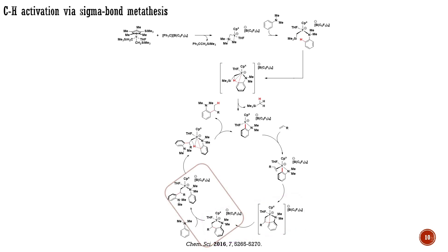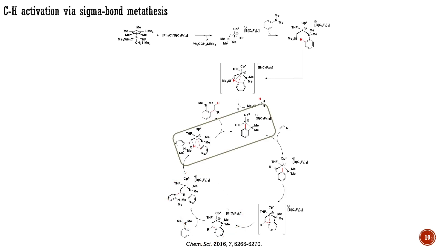Next, the generated intermediate undergoes ligand substitution with another molecule of aniline, resulting in this intermediate. The final stage of the process involves the CH bond cleavage of the newly coordinated substrate via another sigma bond metathesis, leading to the formation of the product and the active catalyst, now possessing another substrate.